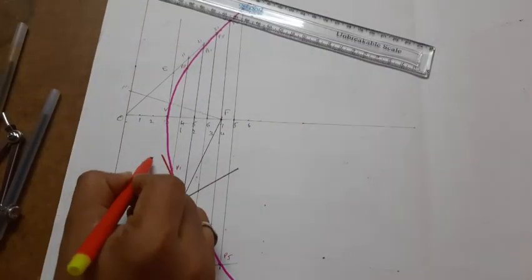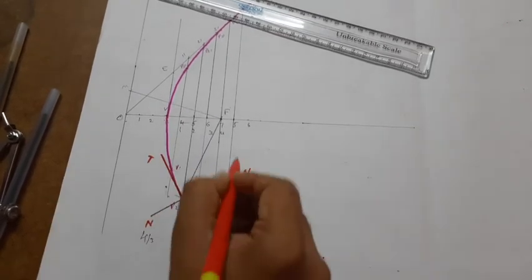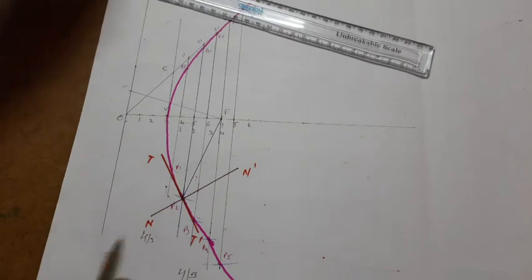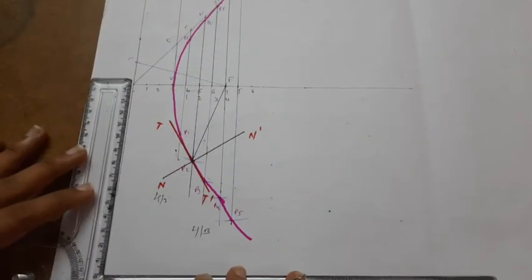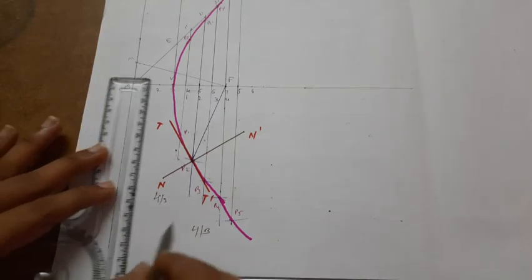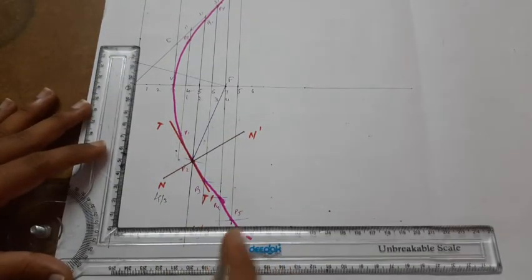This is T, T dash. This is N, N dash. The main important part is the dimensioning. The dimensioning is discussed in a separate video. First, mark the point where normal tangent is drawn - that is 50mm.